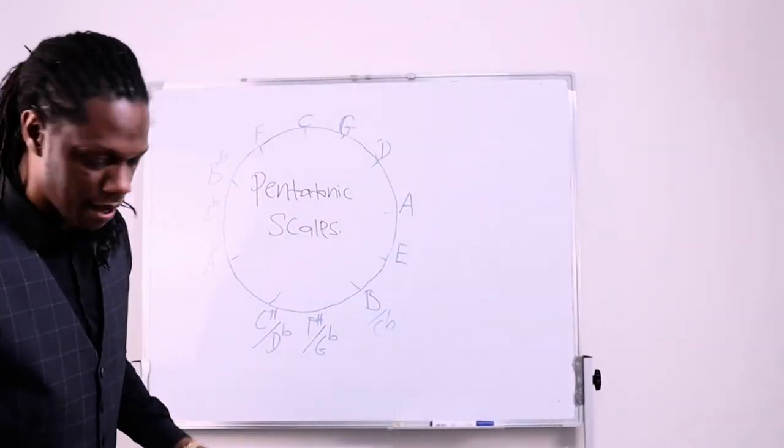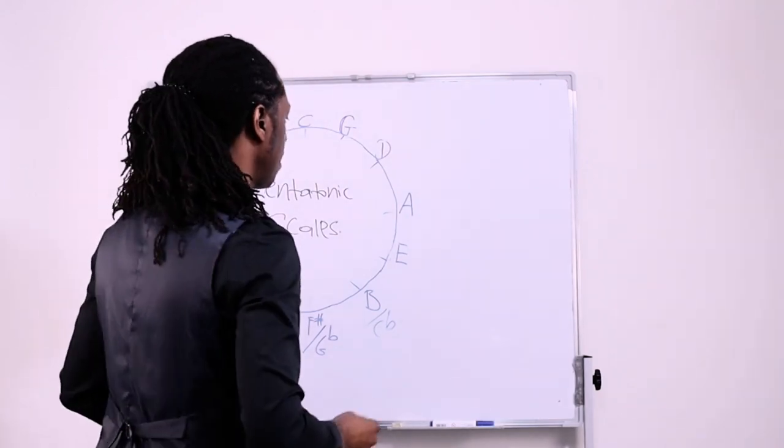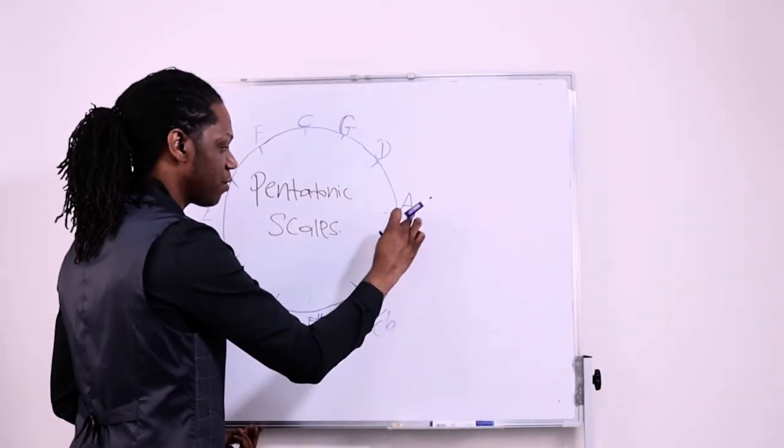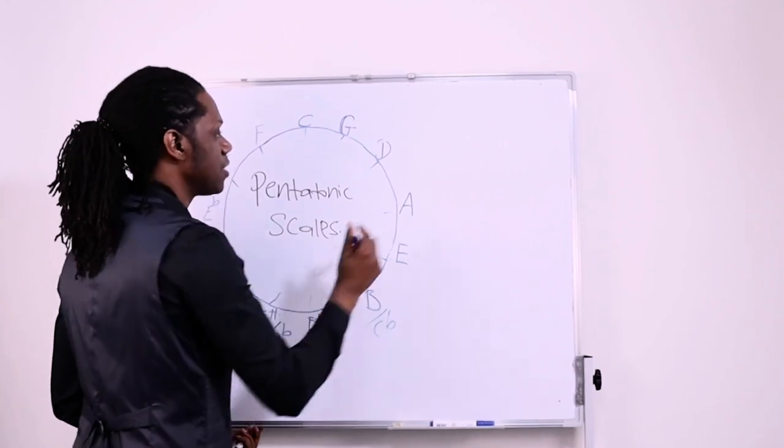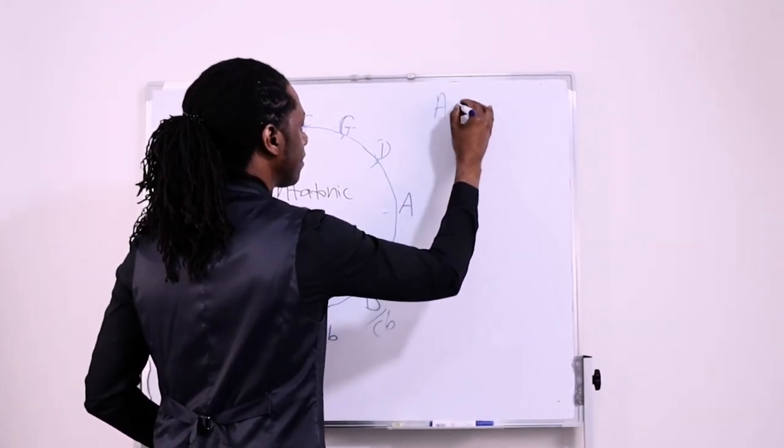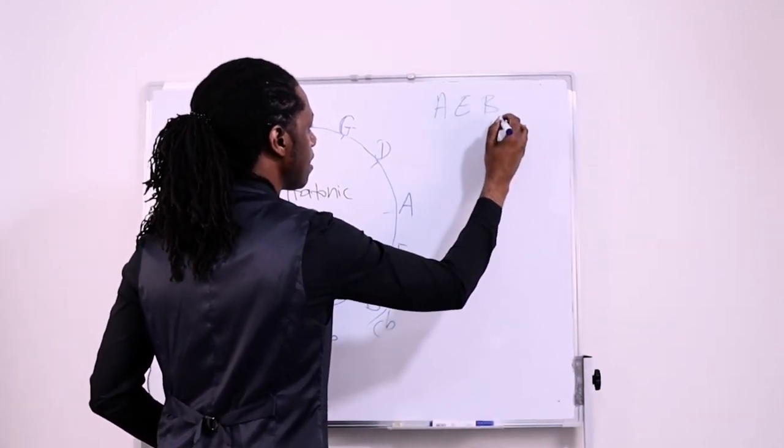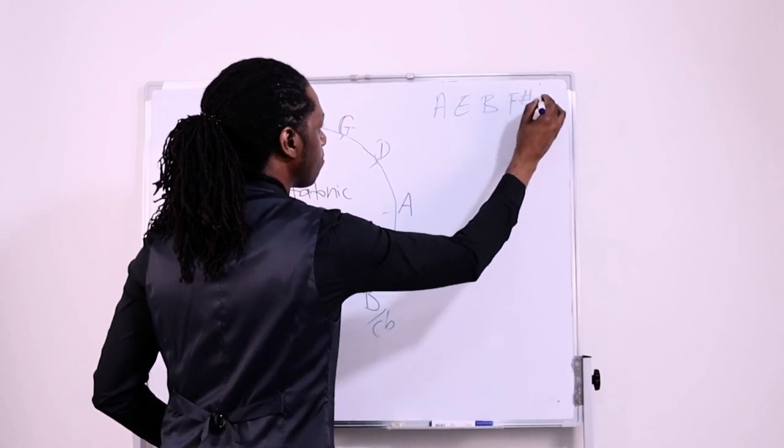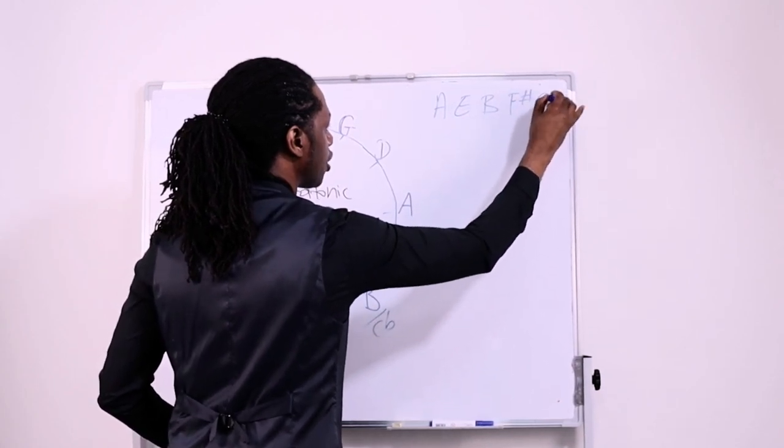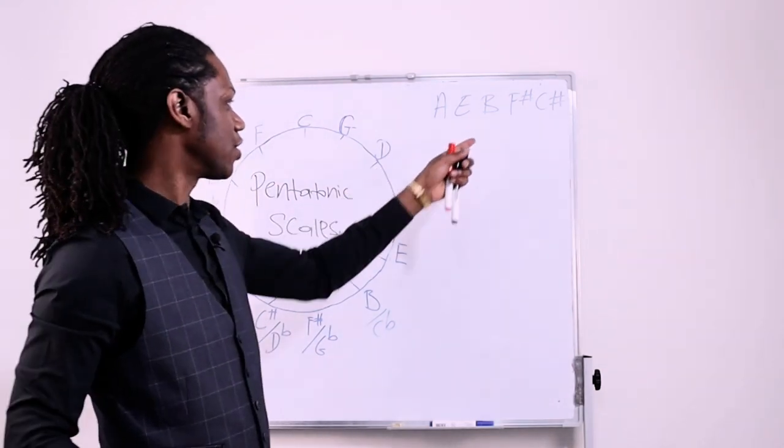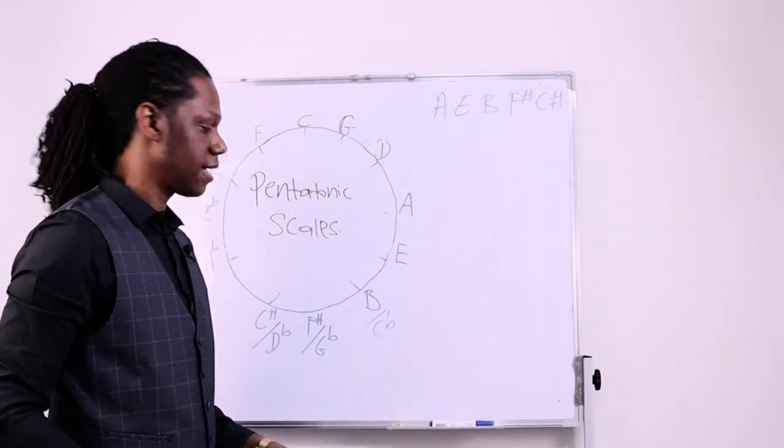Then, to speed this up, I'm not going to reorder them. I'm just going to talk about the notes. So five more notes: A, E, B, F sharp, and C sharp. A, E, B, F sharp, and C sharp. And that is your A major pentatonic scale.